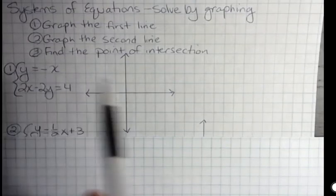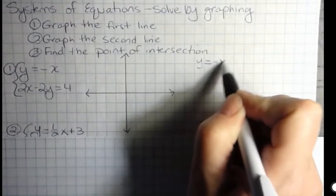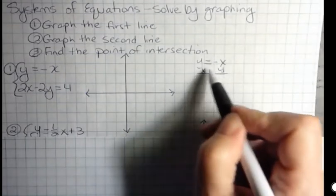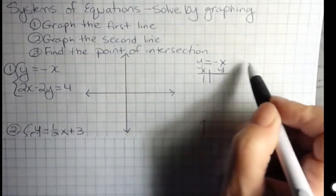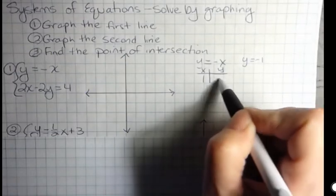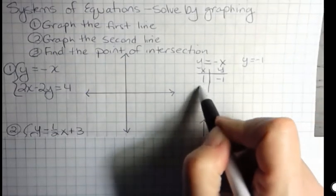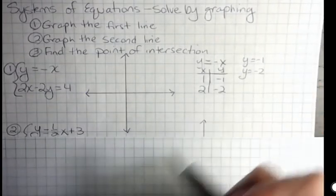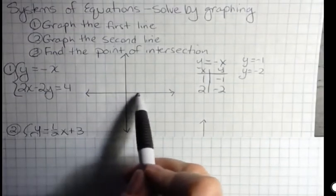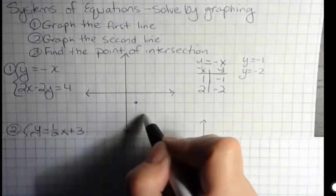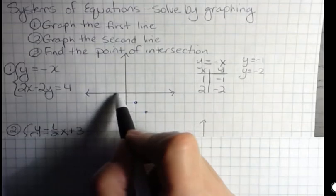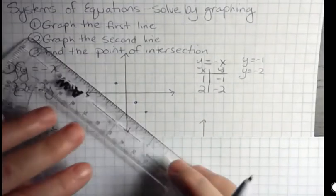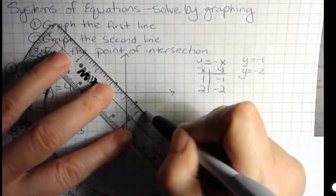But in this first one, y equals negative x, whatever I choose x to be, y is going to be the opposite of that. So if x is 1, then I have y equals negative 1. If x is 2, then I have y equals negative 2. And so I can see that I just always get the opposites. You're just going to plug in values or use the shortcut if you know it.